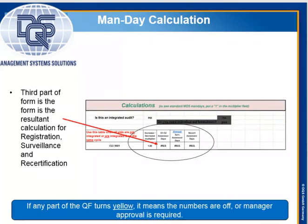The third part of the form is a resultant calculation for the registration, surveillance, and recertification. If any part of the QF turns yellow, it means that some number is off and a managerial approval is required.